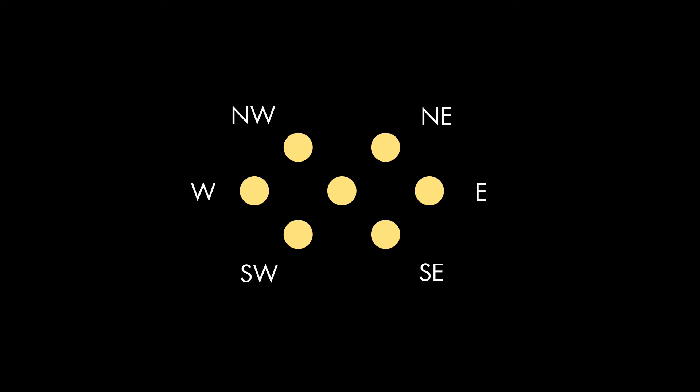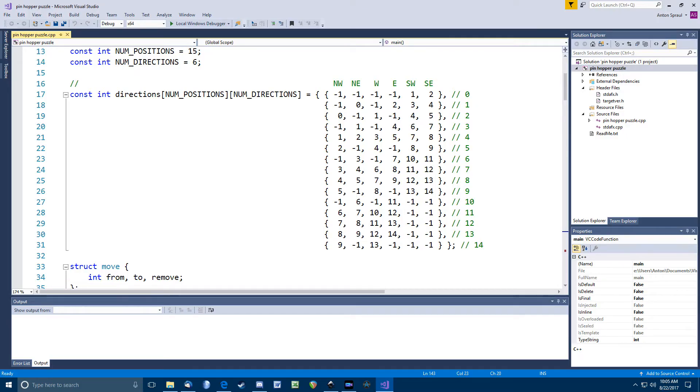Well, here's the idea I came up with. There are six possible directions from each position. I called these northwest, northeast, west, east, southwest, and southeast. I made a constant array that shows, for each position, the position that is in that direction, with minus one to indicate there is no position in that direction.